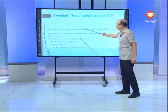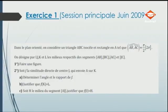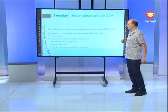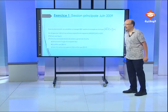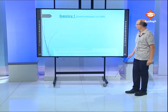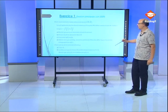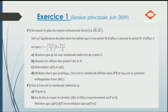Dans la partie numéro 1, on va étudier une similitude directe connaissant le centre. On va déterminer les deux éléments caractéristiques, c'est-à-dire l'angle et le rapport, puis trouver quelques images de quelques points. Dans la deuxième partie, on va étudier la forme complexe d'une similitude indirecte, puis la composée d'une similitude directe et d'une similitude indirecte.